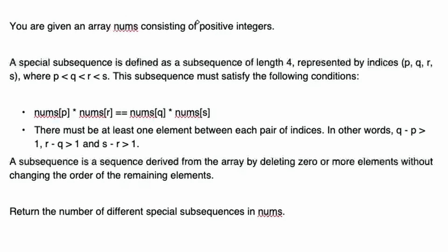The question states that we're given an array nums consisting of positive integers. A special subsequence is defined as a sequence of length 4 represented by indices p, q, r, s in that order, where p < q < r < s. The conditions are: nums[p] * nums[r] must equal nums[q] * nums[s], and there must be at least one element between each pair of indices — so q cannot be adjacent to p, r cannot be adjacent to q, and s cannot be adjacent to r. We want to return the number of different special subsequences in nums.